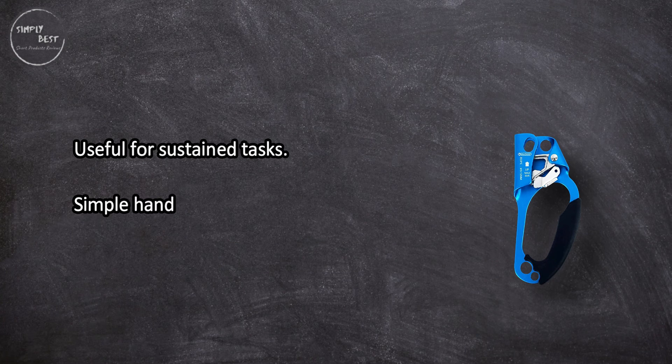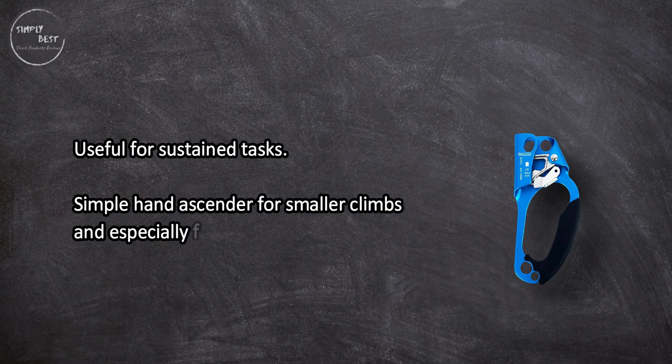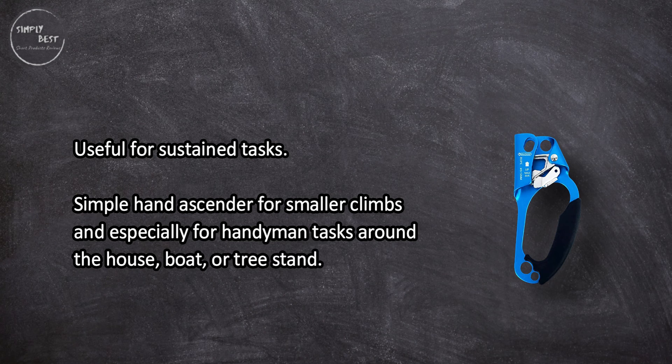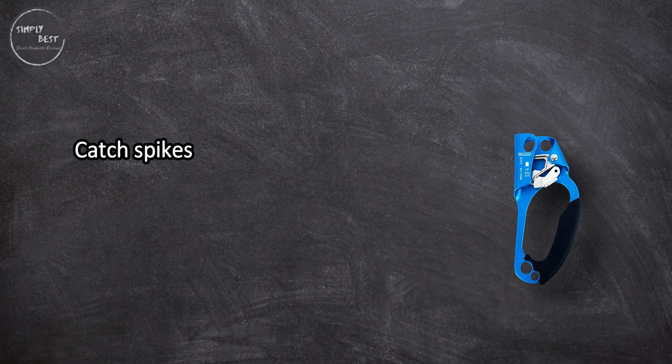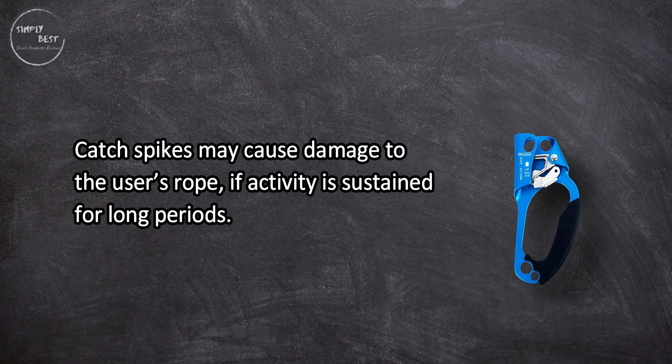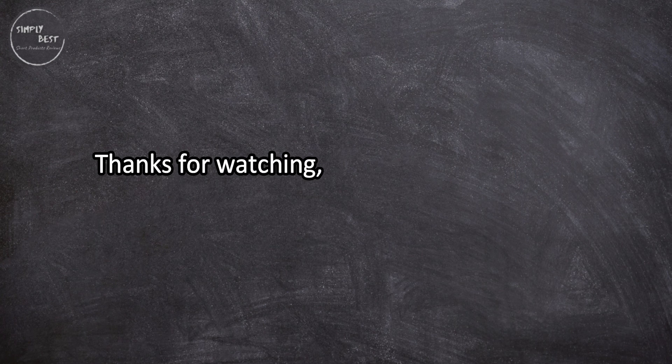Useful for sustained tasks. Simple hand ascender for smaller climbs and especially for handyman tasks around the house, boat, or tree stand. Catch spikes may cause damage to the user's rope if activity is sustained for long periods.